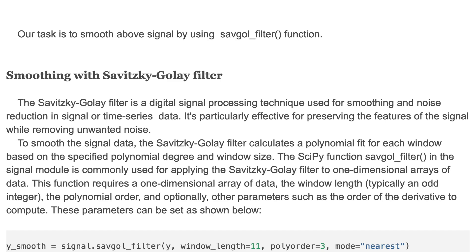To smooth the signal data, the Savitzky-Golay filter calculates a polynomial fit for each window based on the specified polynomial degree and window size. The SciPy function savgol_filter in the signal module is commonly used for applying the Savitzky-Golay filter to one-dimensional arrays of data.